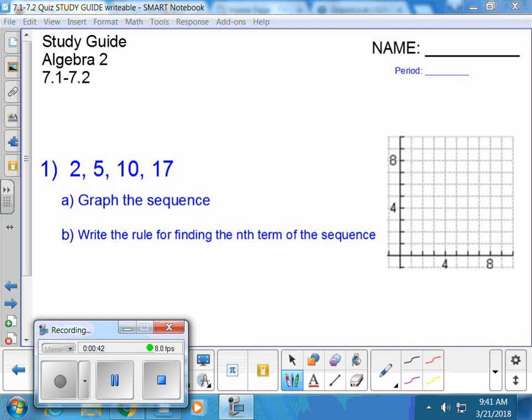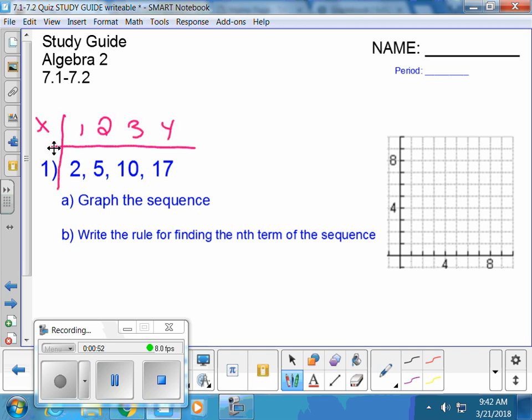So we're gonna graph this sequence, but how can we graph a single variable? We can't, right? We need two variables. So we're gonna assign an X variable to all of these Y variables, and those ordered pairs are the ones we'll be graphing. All these are Y values. They need to have corresponding X values. So term 1 is a 2, term 2 is a 5, term 3 is a 10, and that's how that works.